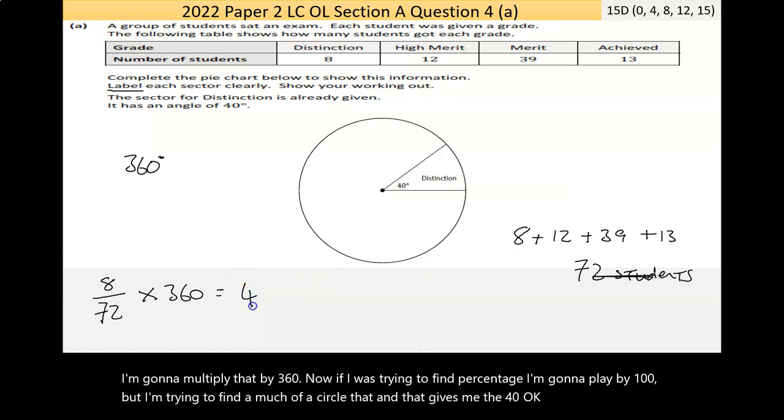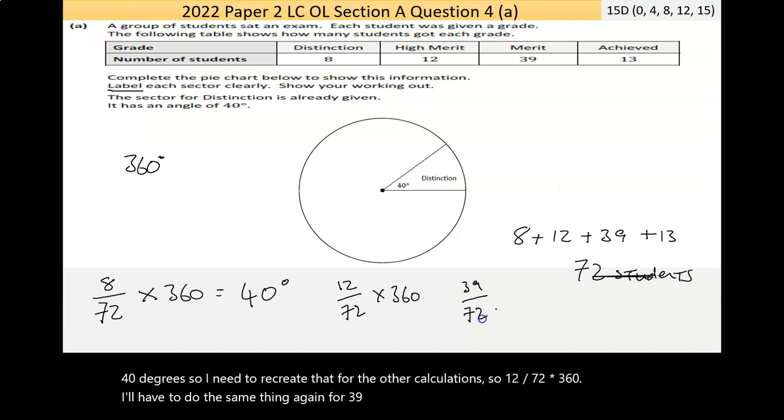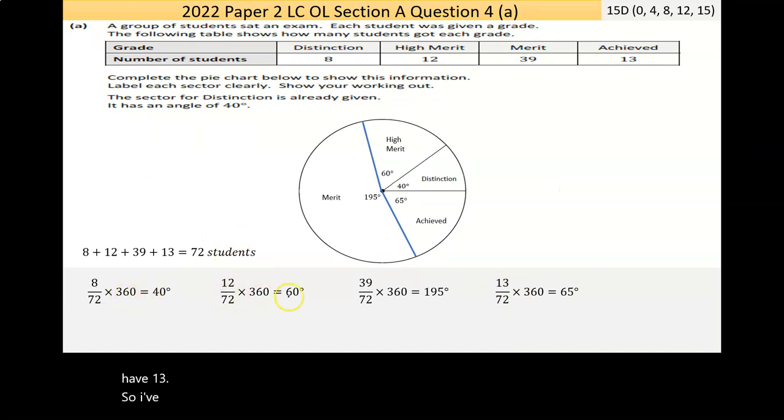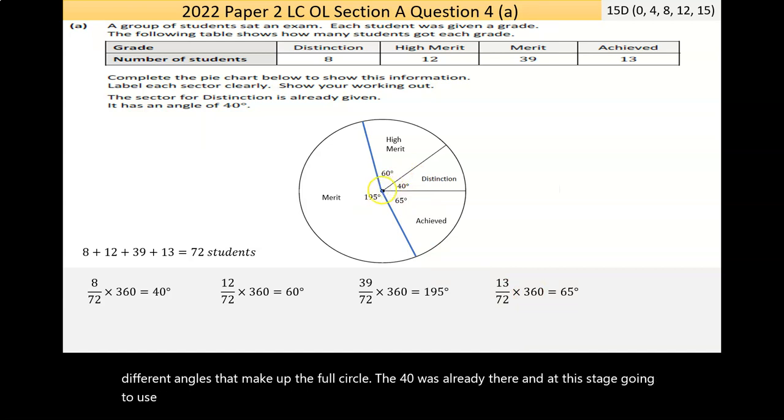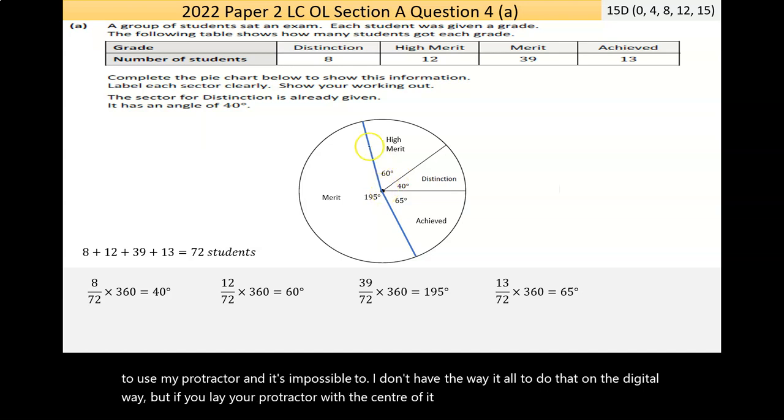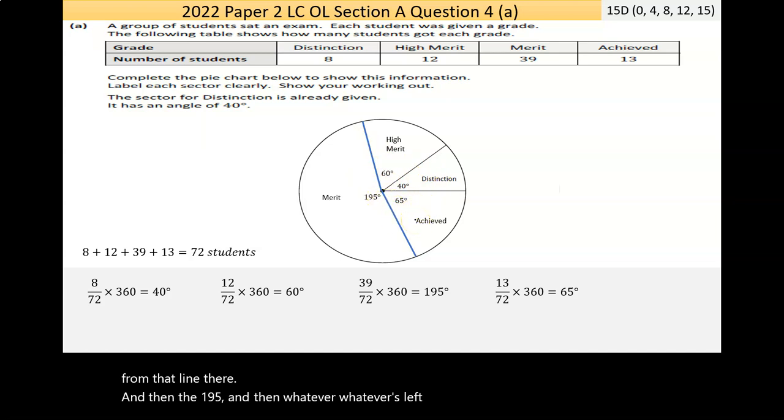I need to recreate that for the other calculations. So 12 over 72 times 360. I'll have to do the same thing again for 39 out of the 72 times 360, and then the last one of 13. So I've done it here, that's the four different angles that make up the full circle. The 40 was already there. At this stage, I'm going to use my protractor. I don't have the way to do that digitally, but if you lay your protractor with the center here and measure 60 degrees from that line, then the 195, and then whatever's left is the 13 of the 72.